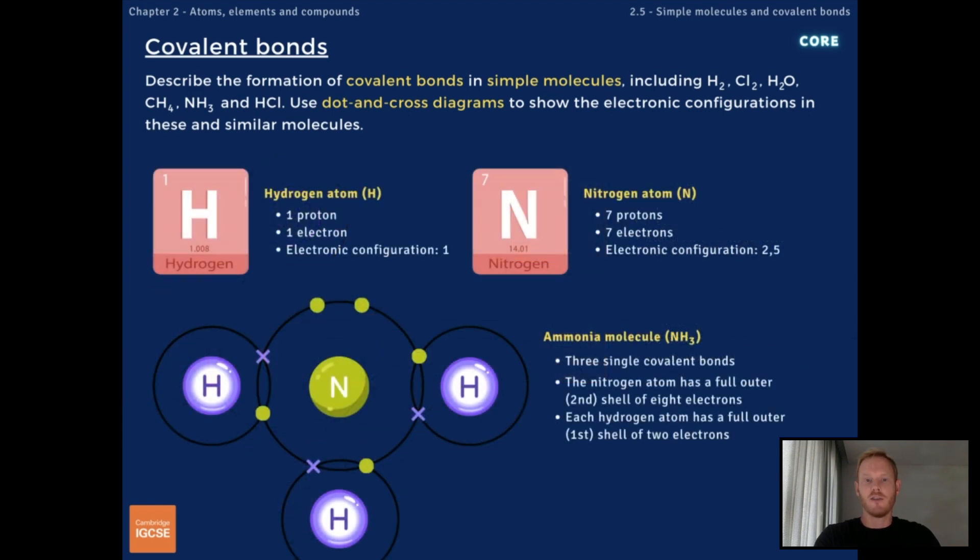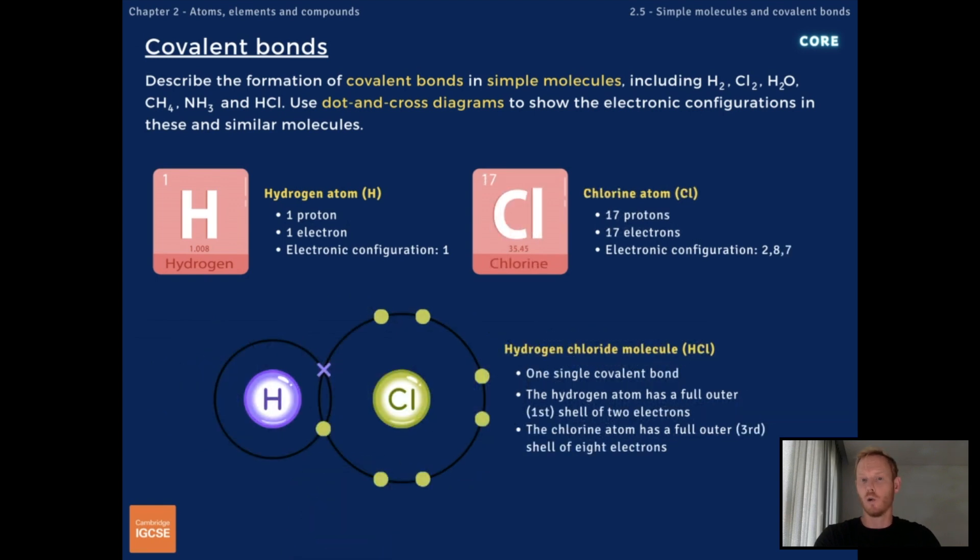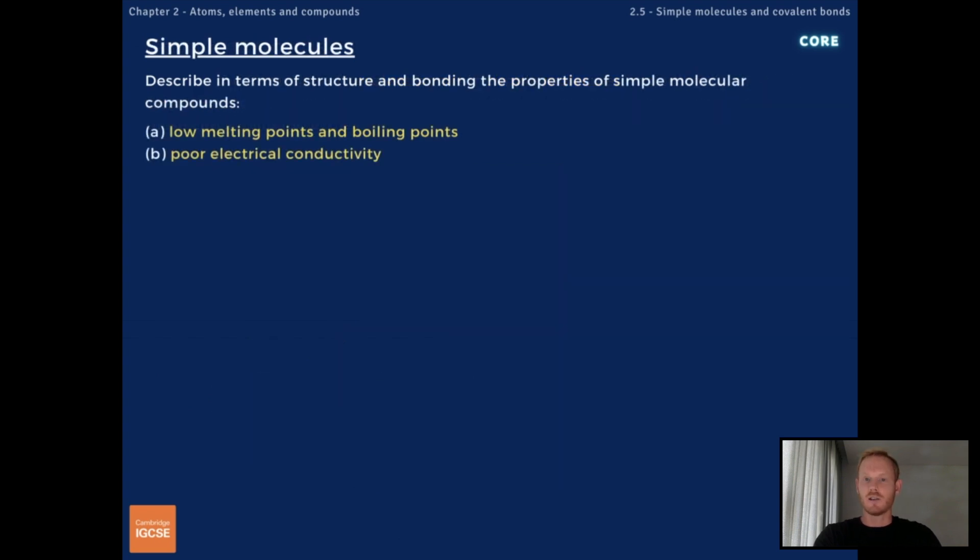Nitrogen has five outer shell electrons, so it bonds with three hydrogen atoms to form ammonia, which has the formula NH3. Finally, hydrogen and chlorine share one pair of electrons to form hydrogen chloride, or HCl. Next, you need to describe the properties of simple molecular compounds in terms of structure and bonding.